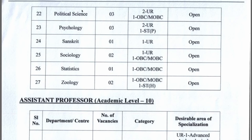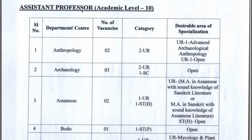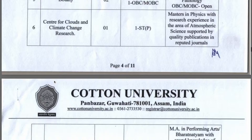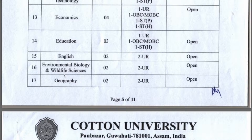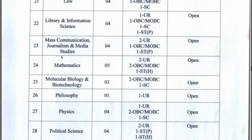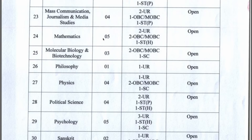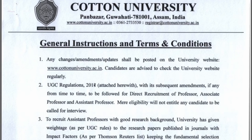Next is Assistant Professor — this is the biggest vacancy with 100 posts across approximately 30 departments. Departments include: Anthropology, Archaeology, Assamese, Bodo, Botany, Centre for Clouds and Climate Change Research, Centre for Language Culture and Arts, Centre for Physical Education, Centre for Women's Studies, Chemistry, Commerce, Computer Science and IT, Economics, Education, English, Environmental Biology and Wildlife Science, Geography, Geology, Hindi, History, Law, Library and Information Science, Mass Communication, Journalism and Media Studies, Mathematics, Molecular Biology and Biotechnology, Philosophy, Physics, Political Science, Psychology, Sociology, Statistics, and Zoology.